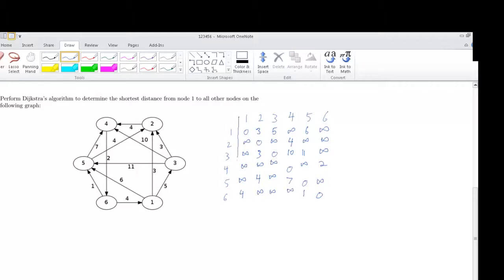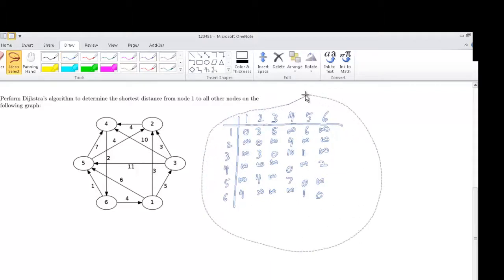Now we have our representation in the form of an adjacency matrix so we understand where each node can go to and the weight associated. I'm just going to move this to leave enough room.